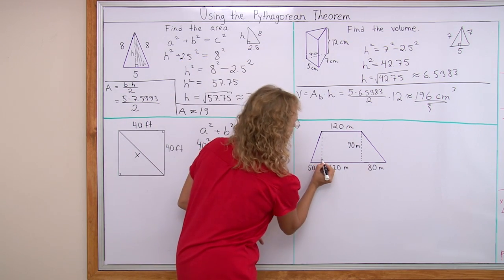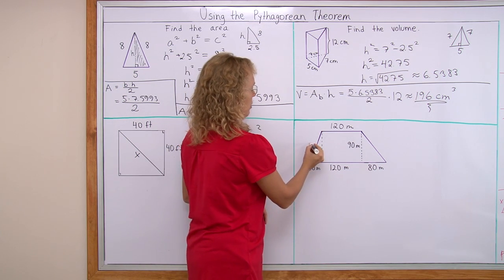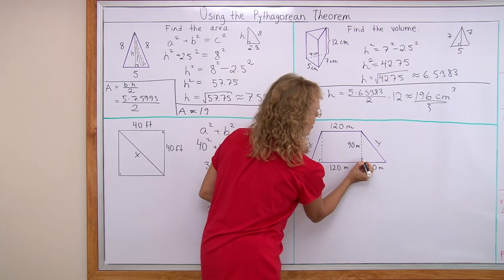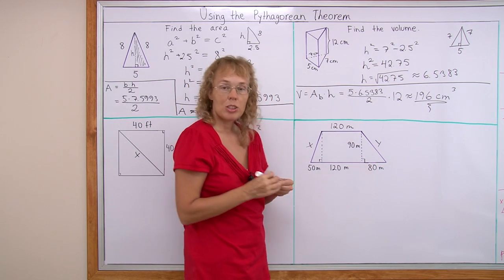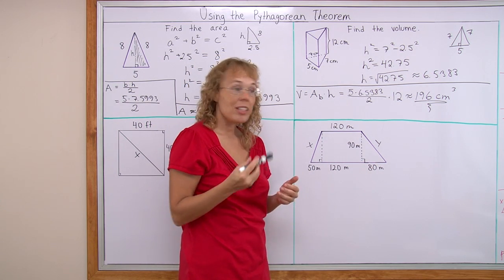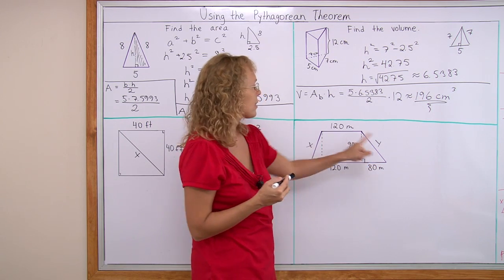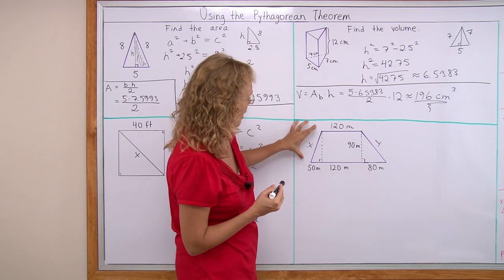Well, we have a right triangle here, so let me call this x and this one y, and over here we have a right triangle too, so we just apply the Pythagorean theorem to this triangle and to this triangle to find x and y. Let's first do x.